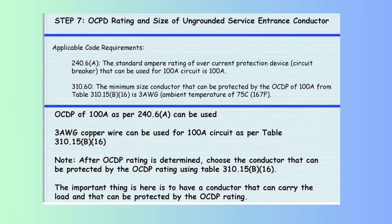Step 7 determines the rating of the overcurrent protection device and the size of the ungrounded service entrance conductor. Per NEC Section 240.6(A), the standard ampere rating for the OCPD for a 100-ampere circuit is 100 amperes. Per Table 310.15(B)(16), the minimum conductor size protected by a 100-ampere OCPD is 3 AWG copper wire, at an ambient temperature of 75°C (167°F). Once the OCPD rating is determined, select a conductor size that can safely carry the load and comply with Table 310.15(B)(16).